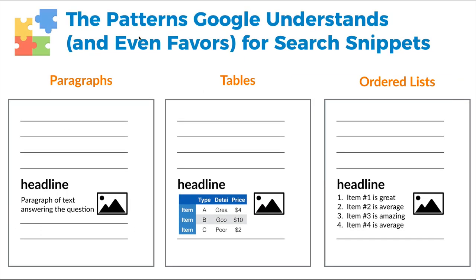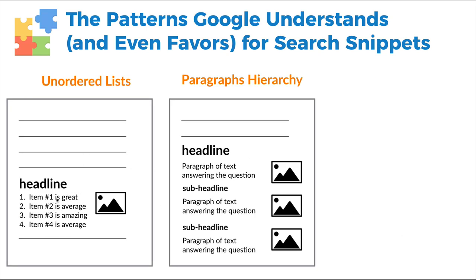Here are some patterns that Google understands and favors for search snippets. The AI is still in early stages and looking for specific patterns. First is a headline, a paragraph of text, and a small picture — Google absolutely loves this. Next is a table: a headline, a table, and a small picture. Google also loves ordered lists: a headline, a list of items, and a small picture — great for 'how to' answers like step one, step two, step three. Then there are unordered lists for other terms. Finally, paragraph hierarchies — a major paragraph with sub-headlines and images — which Google understands well for advanced search terms.